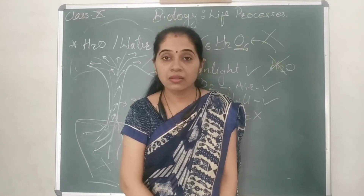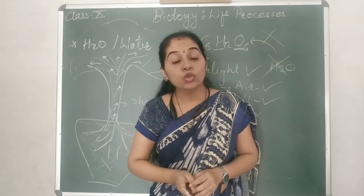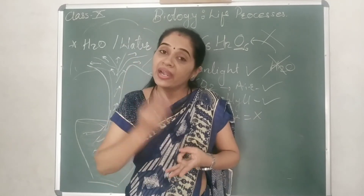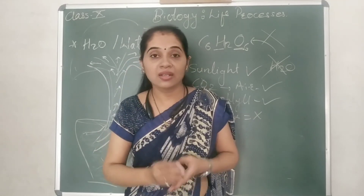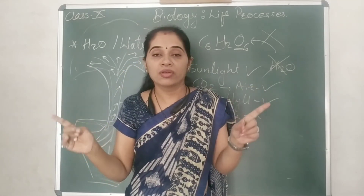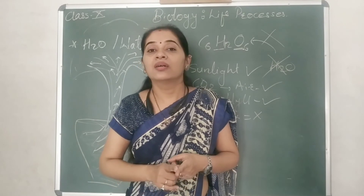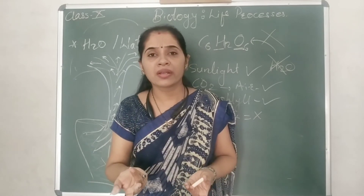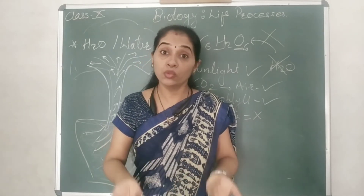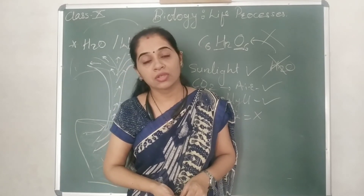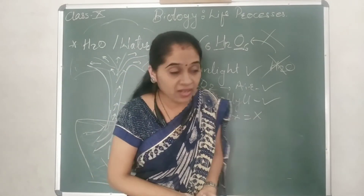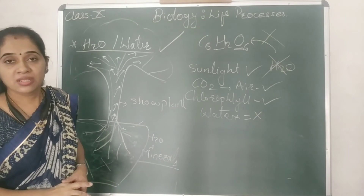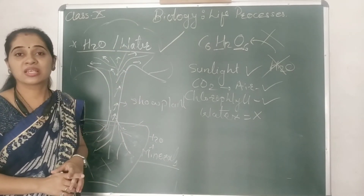What does it indicate? It indicates that even though you have ample sunlight, sufficient carbon dioxide, and the leaves are green — if you are not providing water, the process of photosynthesis does not take place. The moral of the experiment is that water is also a very essential part of photosynthesis. Without water, the process of photosynthesis cannot take place.